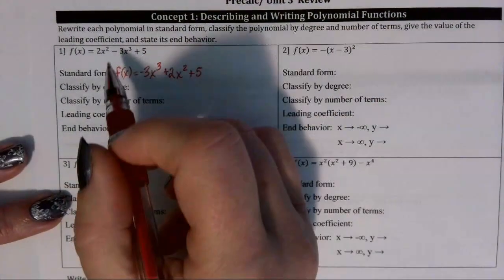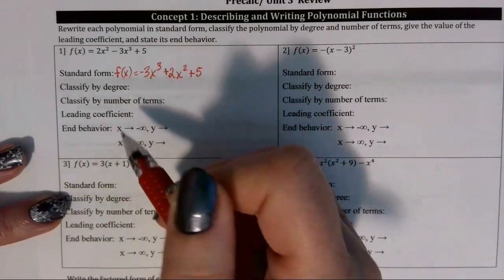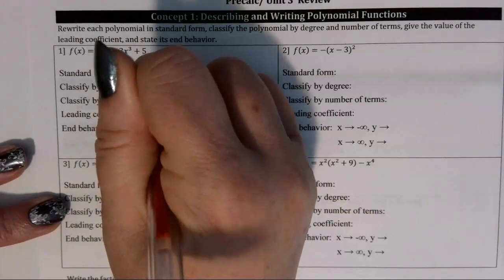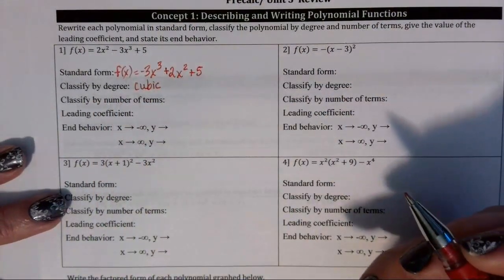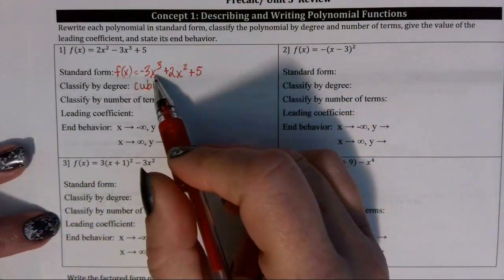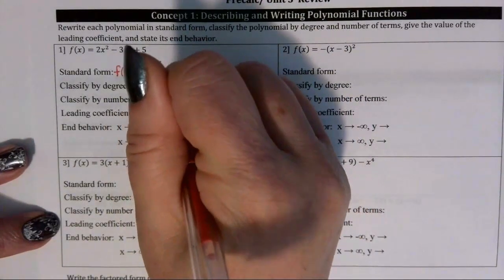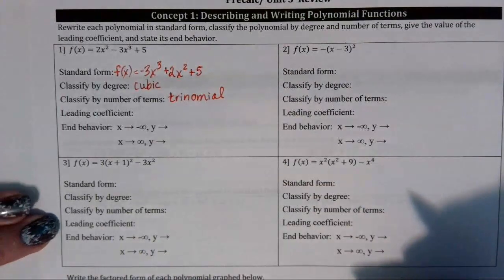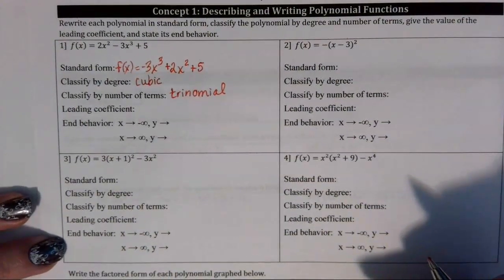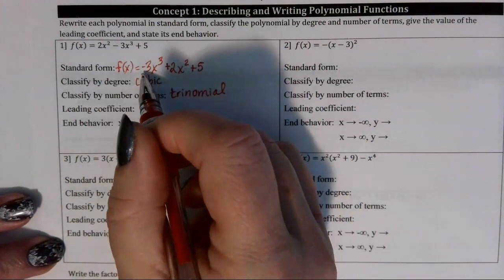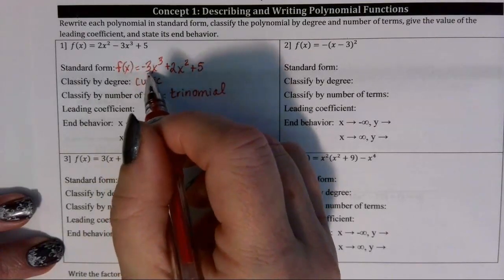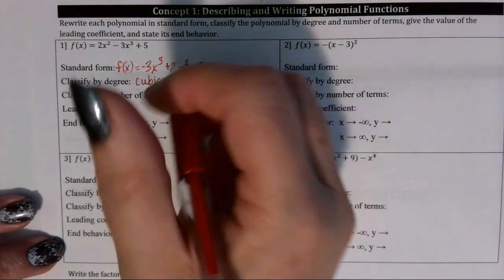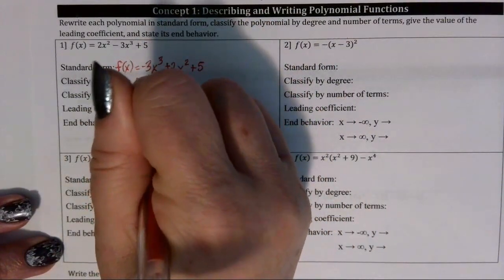Classifying by degree, the highest exponent term is 3, and that makes this a cubic. Classifying by number of terms, our polynomial has three terms, and we call that a trinomial. So this is a cubic trinomial, and the leading coefficient is the constant being multiplied times our highest exponent variable, which is negative 3.